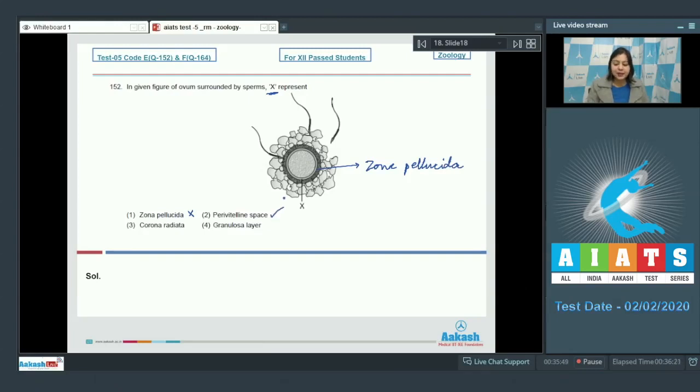Number 2. Perivitelline space is correct as perivitelline space immediately surrounds the oocyte. Number 3. Corona radiata is also incorrect as this layer, the outermost cells, make up the corona radiata.